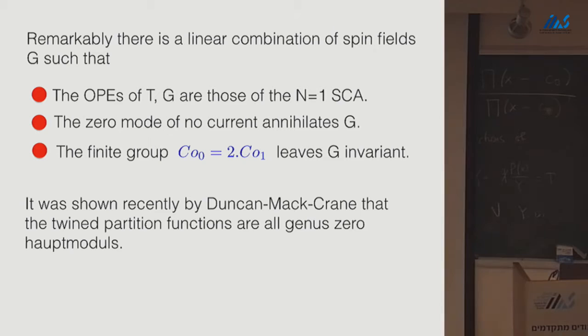So it's remarkable that there is a particular linear combination of the spin fields, I'll call it G, such that the OPEs of the stress tensor in G are those of the n equals 1 super conformal algebra. The zero mode of no current annihilates G, that means this choice of G breaks the continuous SO24 symmetry. But it turns out there's a finite group, and the finite group is a double cover of Conway 1. And this double cover is the automorphism group of the Leach lattice.